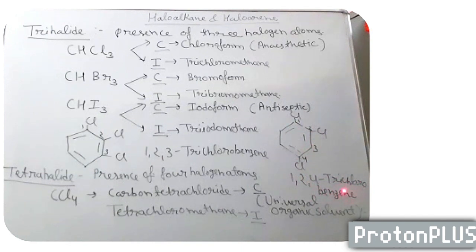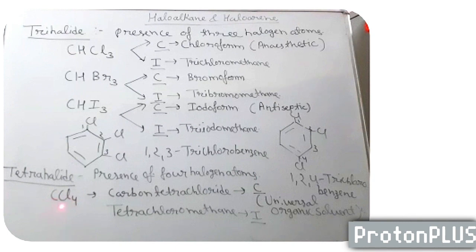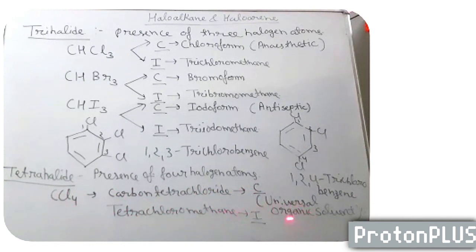Tetrahalides — when 4 halogen atoms are present, it is named as tetrahalide. For example, CCl4 — 4 chlorine atoms on the carbon atom. All 4 hydrogen atoms of methane are substituted by chlorine atoms. So it is carbon tetrachloride — common name — and IUPAC is tetrachloromethane. This compound, CCl4, carbon tetrachloride, is a universal organic solvent.